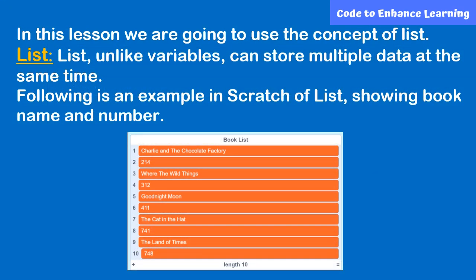In this lesson, we are going to use the concept of list. An e-catalog has information like name of the book, number of the book, name of the author, and many other information. How do you think we can store this much information and manipulate it? The answer is list.